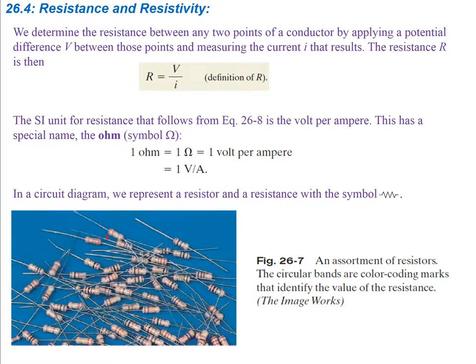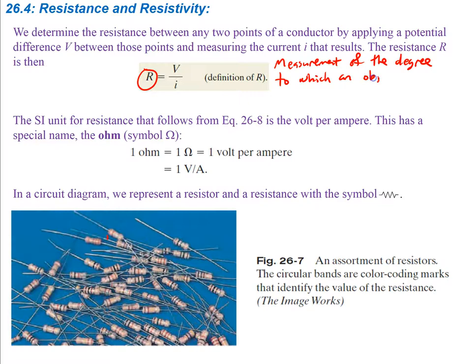We determine resistance between any two points of a conductor by applying a potential difference V between those points and measuring the current I that results. The resistance is then R = V/I, where R is resistance, V is voltage, and I is current.